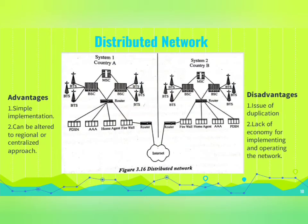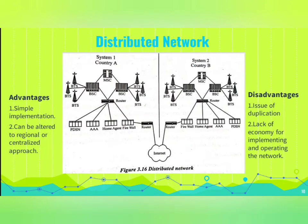The distributed network architecture is ideal for a wireless company that has only a few markets that are geographically dispersed. The advantage of a distributed network is its simple implementation. The distributed architecture can also be folded at a later time into a regional or centralized approach. The disadvantage is the issue of duplication and the lack of economies of scale for implementing and operating the network.